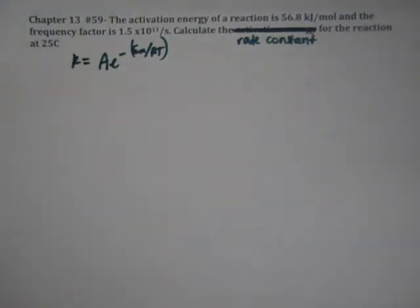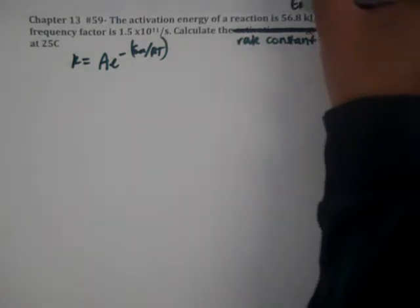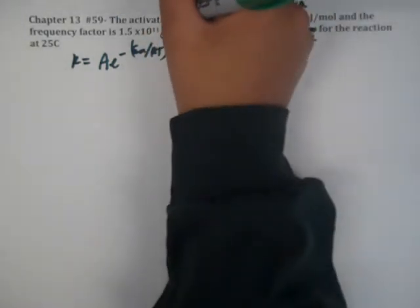We're going to raise e to the negative activation energy over RT. So we can basically plug in all these values. We have activation energy Ea, we have frequency factor which is A, and we have T.